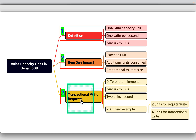Transactional write requests have different requirements. For an item up to one kilobyte, two write capacity units are needed for one write per second — double the normal write capacity. As an illustration, a 2KB item would need two units for a regular write, but four units for a transactional write.